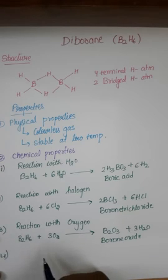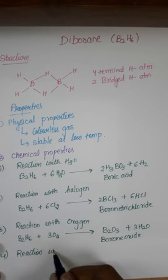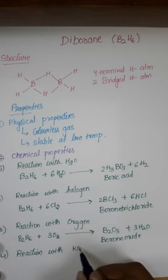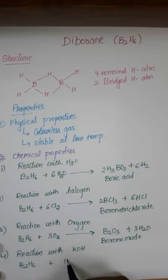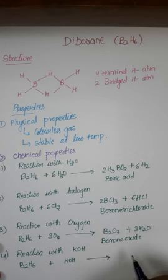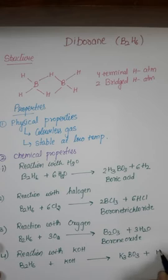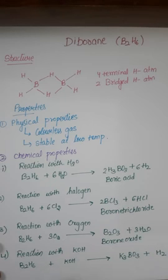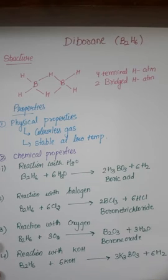The next reaction: reaction with KOH. When Diborane reacts with KOH, it will give borate with evolution of hydrogen. Balance this equation. This reaction is balanced.